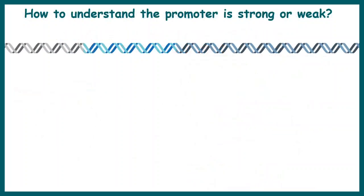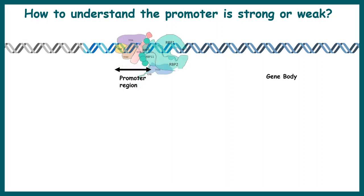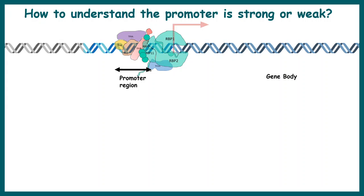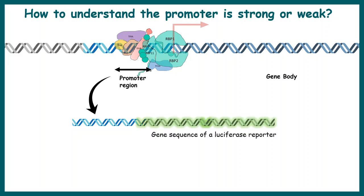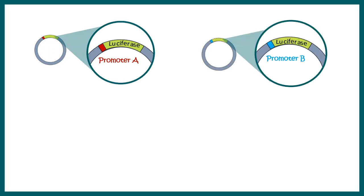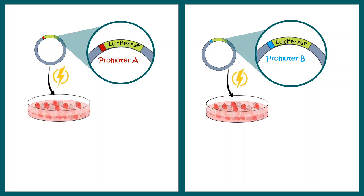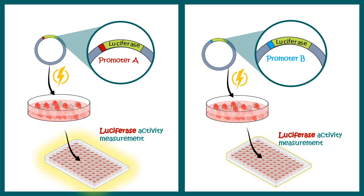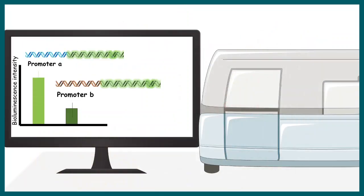Let's take another example. We might ask whether a promoter is strong or weak. Under the promoter there is a gene body, and in the promoter, RNA polymerase is recruited. When the gene is transcribed, mRNA is produced. This particular promoter is cloned upstream to a reporter sequence and the reporter activity tells us about the strength of the promoter — bioluminescence serves as a readout for promoter strength. Here we have promoter A and promoter B, both driving a luciferase reporter gene. We transfect them into the same cells, the same number of cells, and then measure luciferase activity by adding substrate. In this example, promoter A is much stronger than promoter B, which is why bioluminescence activity is much stronger in promoter A compared to promoter B.